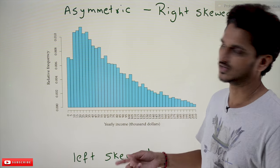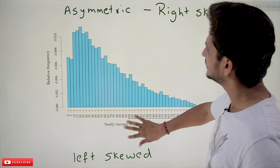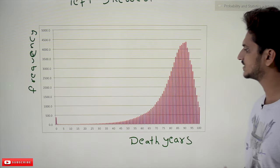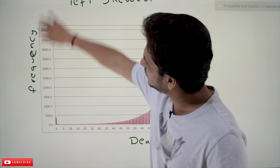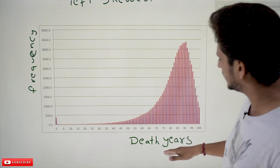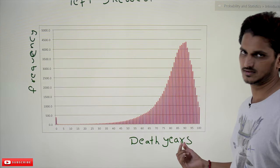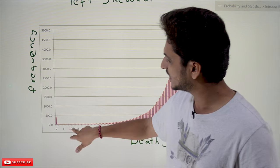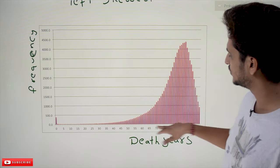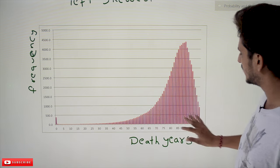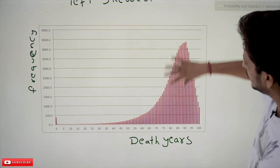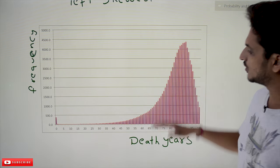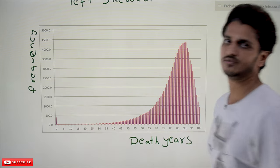Similarly, we have left skewed distributions. For example, if you take the frequency on the Y-axis and age of death in years on the X-axis — how many people die at 0 to 1 year, 5 to 10 years, 15 to 20 years — as you move toward 55 to 95 years, most people have their death in that range. This is an example of left skewed data.